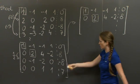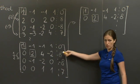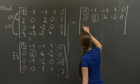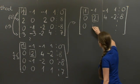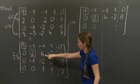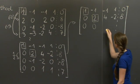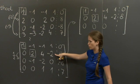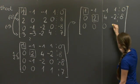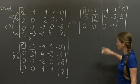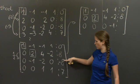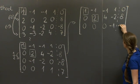The third row gets replaced by the third row plus 1/2 times the second row, and becomes 0, 0. 2 times 1/2 is 1, -2 plus 2, which is 0, -1 plus 0, which is -1, and 4 minus 8, which is -4.